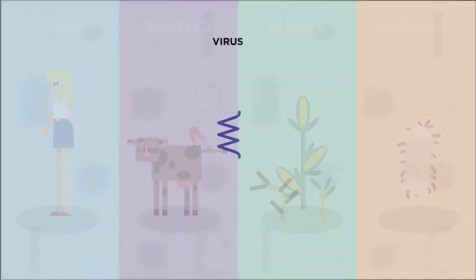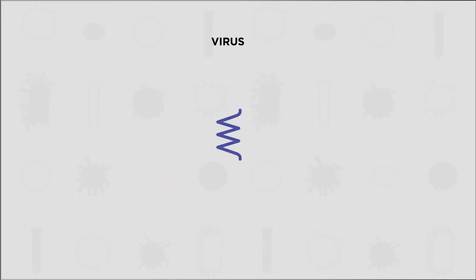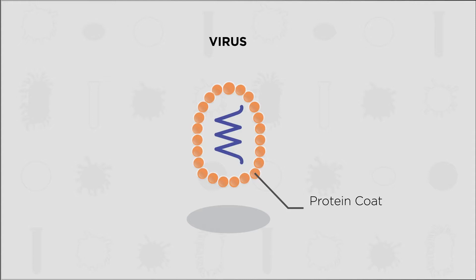Viruses are very simple. They are made up of a protein coat surrounding a strand of genetic material. The genetic material can either be DNA or RNA. Sometimes, a membrane called an envelope surrounds a virus particle. This envelope isn't made by the virus, but is actually stolen from the membrane of the host cell.